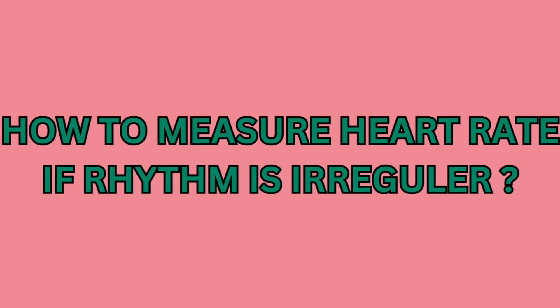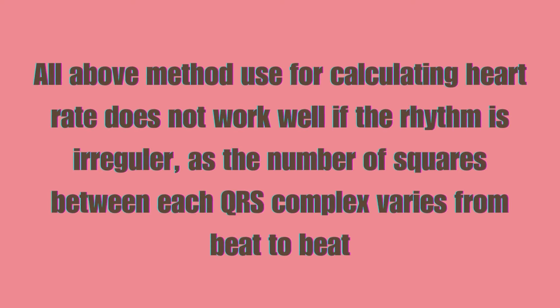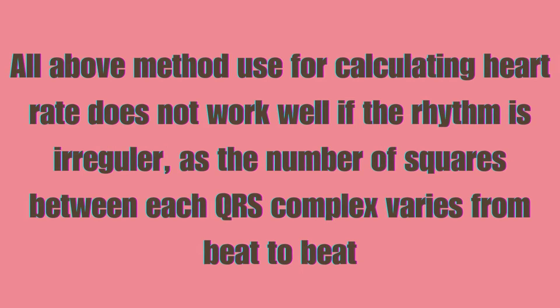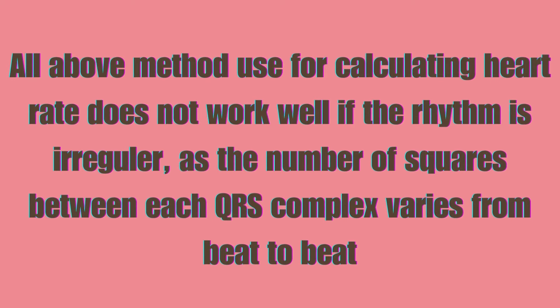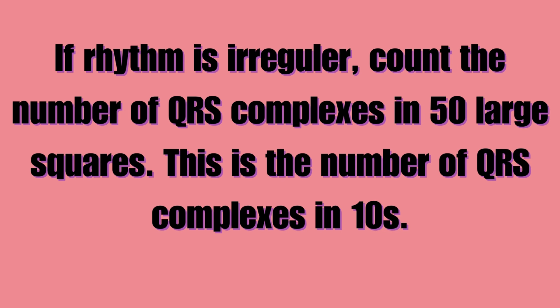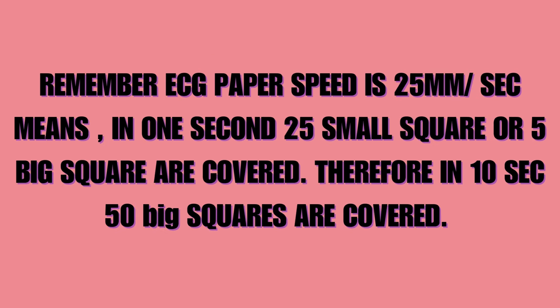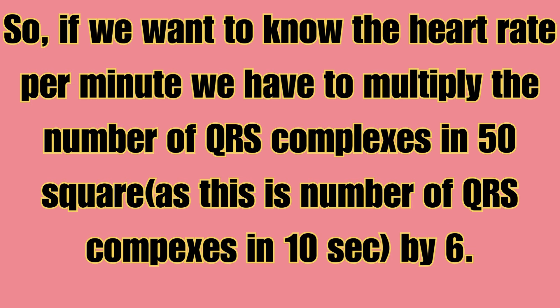How to measure the heart rate if the rhythm is irregular? The above methods do not work well if the rhythm is irregular, as the number of squares between each QRS complex varies from beat to beat. If the rhythm is irregular, count the number of QRS complexes in 50 large squares — this is the number of QRS complexes in 10 seconds. Remember ECG paper speed is 25 mm per second, meaning in 1 second 25 small squares or 5 big squares are covered, so in 10 seconds 50 squares are covered. To get heart rate per minute, multiply the number of QRS complexes in 50 squares by 6.